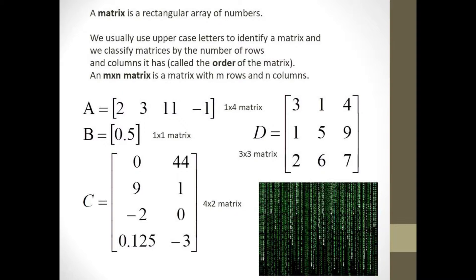Here are a few examples. Matrix A is a 1 by 4 matrix because it has one row and four columns. Similarly, matrix B is 1 by 1, matrix C is 4 by 2, and matrix D is 3 by 3.